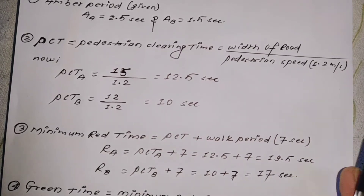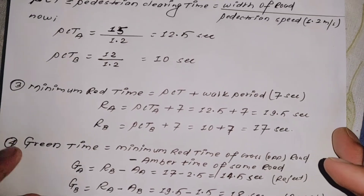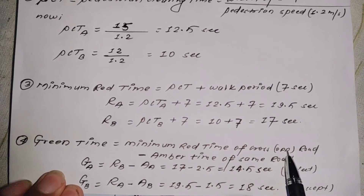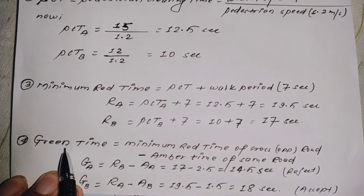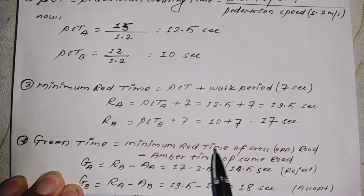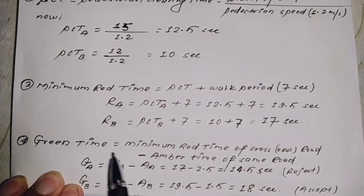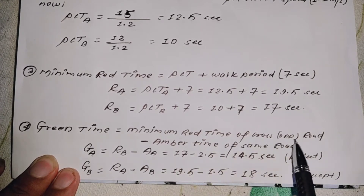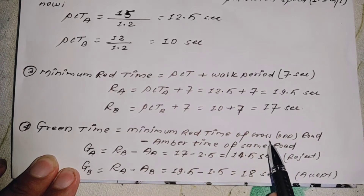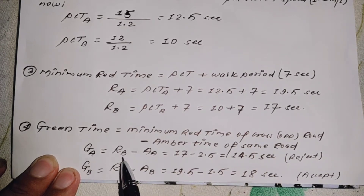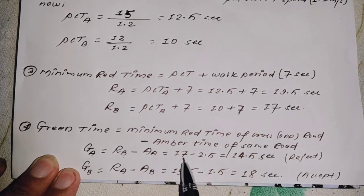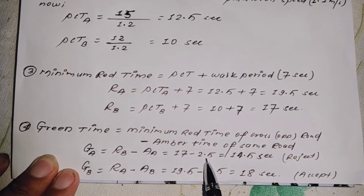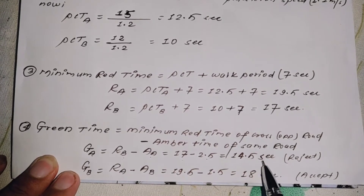Step three: green time calculation. Green time for Road A = minimum red time of the opposite road (Road B) minus amber time of Road A. Green time A = 17 − 2.5 = 14.5 seconds.